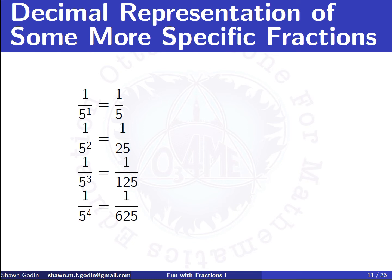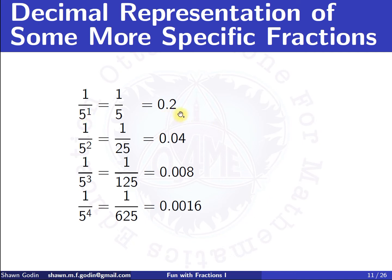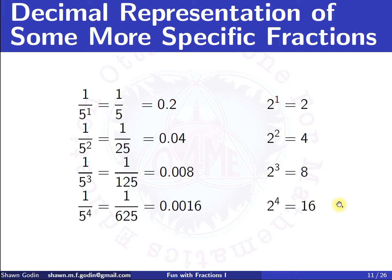And if we think: 5 times 2 is 10, so if reciprocals of powers of 2 have this property with powers of 5, what happens if we look at the reciprocals of powers of 5? Look what happens — 5 to the 1 gives one decimal place, 5 to the 2 gives two, three, and four. And if we look at the digits, we get 2, 4, 8, 16 — just our powers of 2. It's the opposite happening.